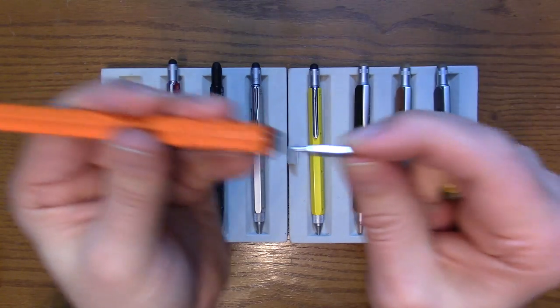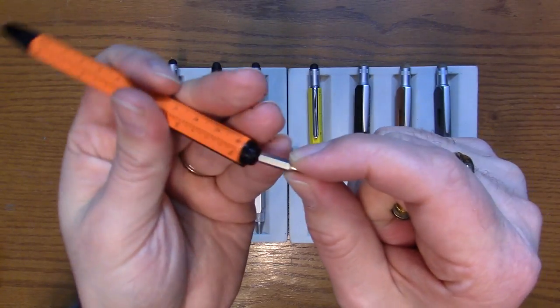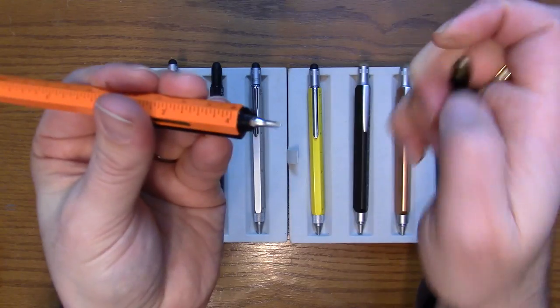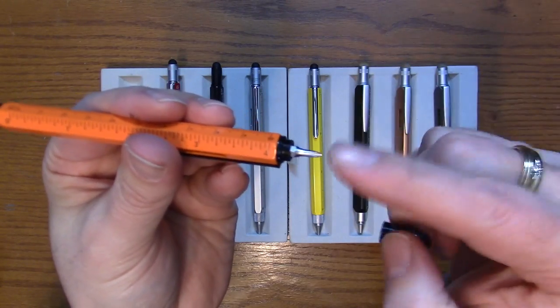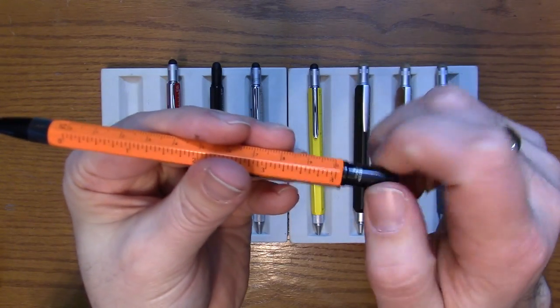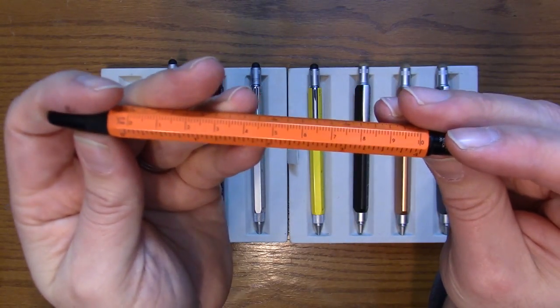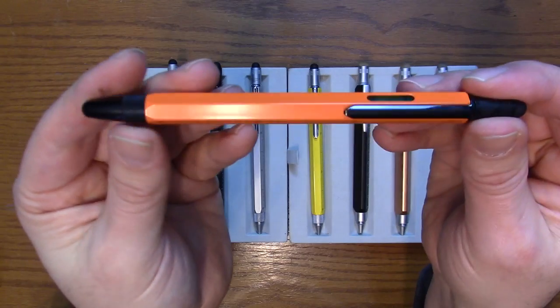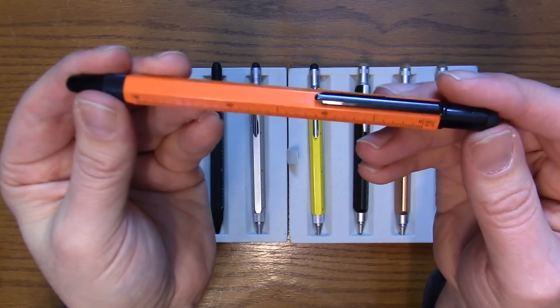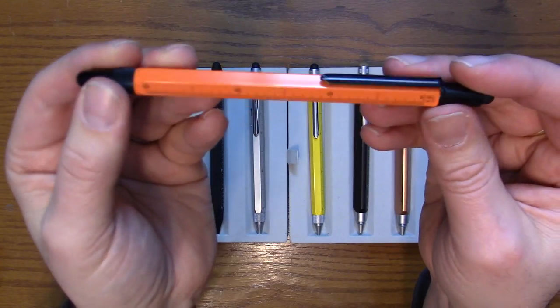And you unscrew that and we've got a Phillips and a standard screwdriver in there. So these are good for small items. Probably work reasonably well on eyeglasses and things like that. I've used the screwdriver myself in a pinch. Nice to have in there.